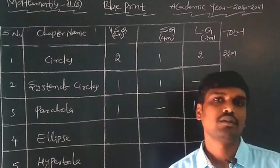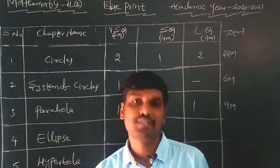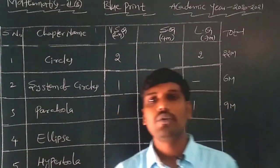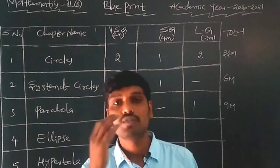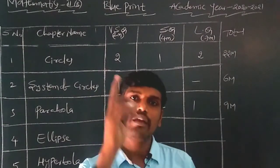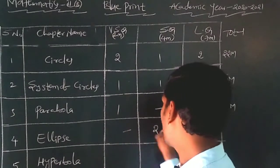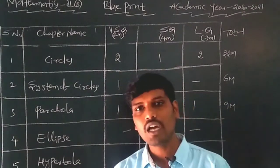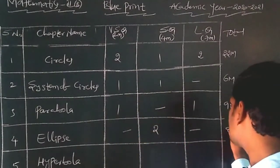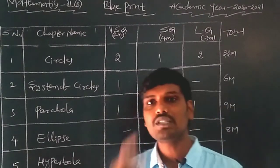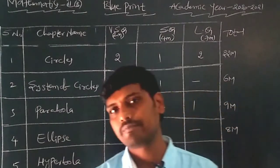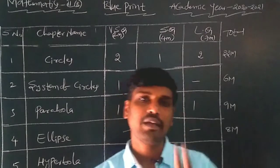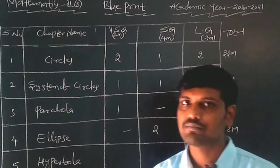The fourth chapter is Ellipse. In this chapter, no 2-mark questions and no 7-mark questions are coming — only 4-mark questions. Two 4-mark questions are coming to the Ellipse chapter, making a total of 8 marks.